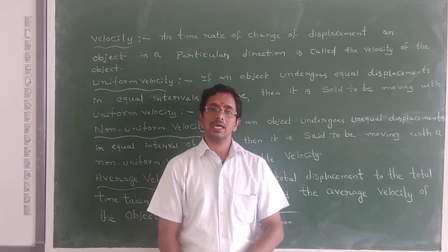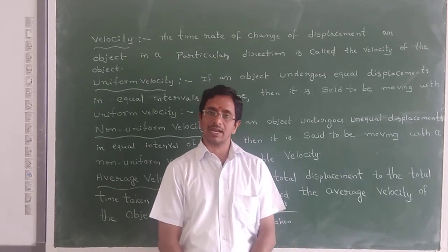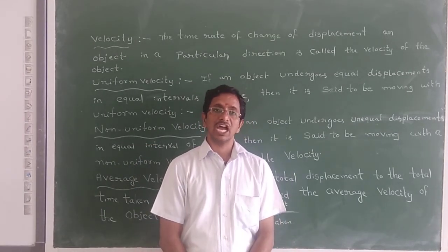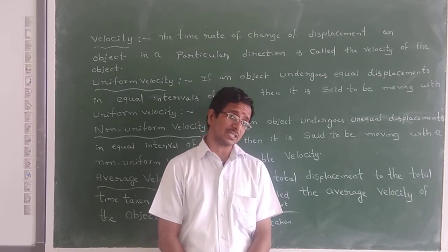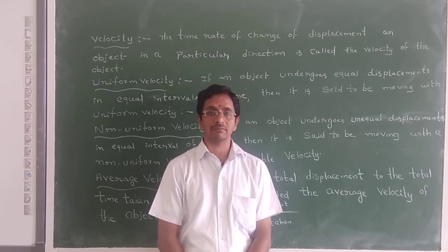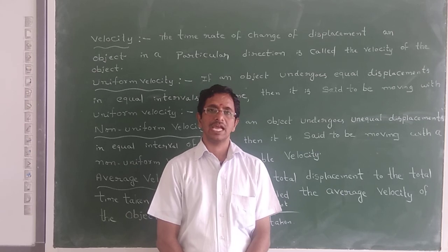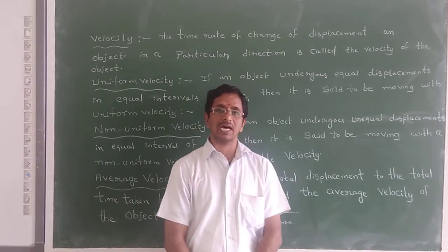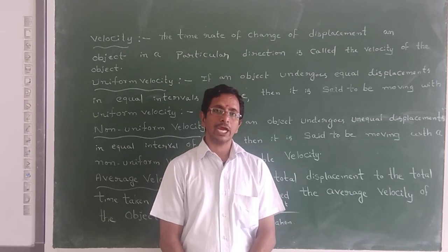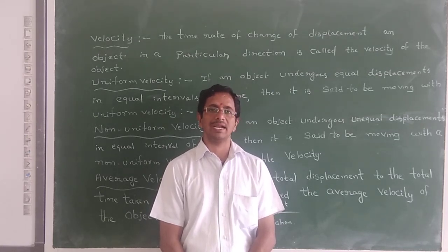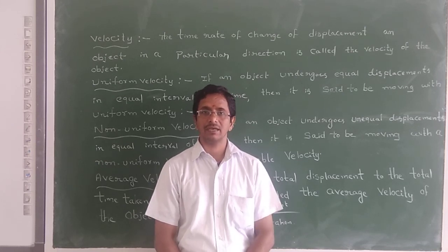Our next concept is Non-Uniform Velocity. If a body covers equal displacements with unequal intervals of time, or unequal displacements with equal intervals of time, such a velocity we call as Non-Uniform Velocity. Next, Average Velocity is defined as the total displacement by total time taken by the object.